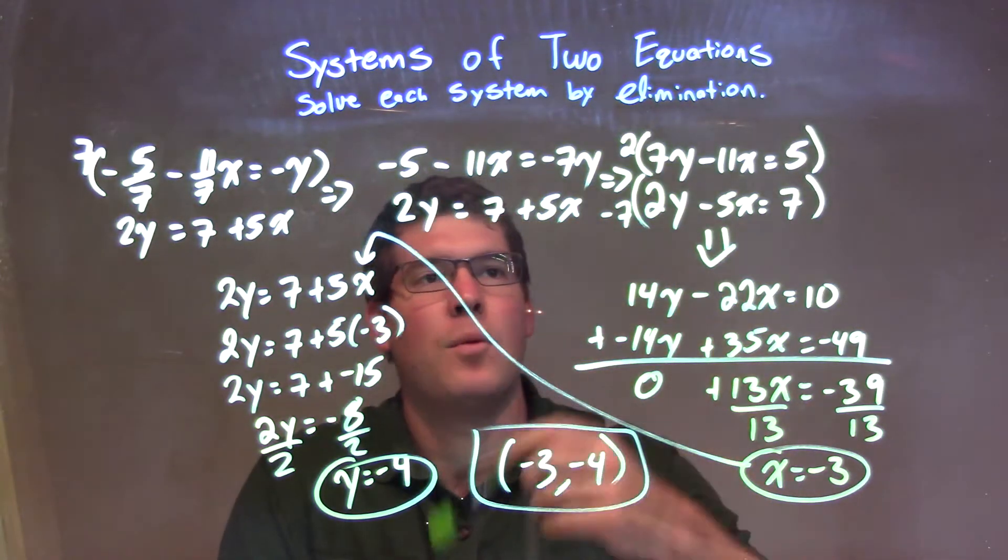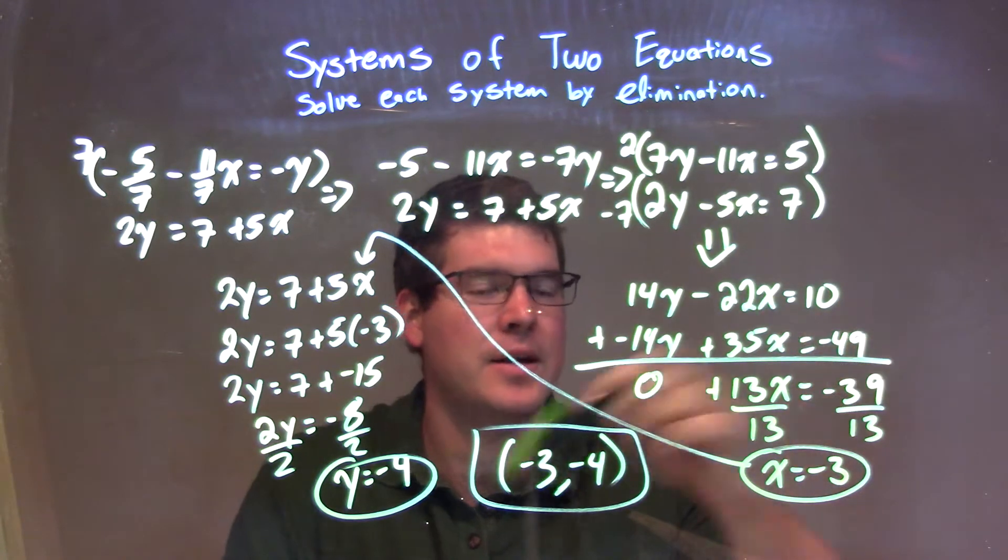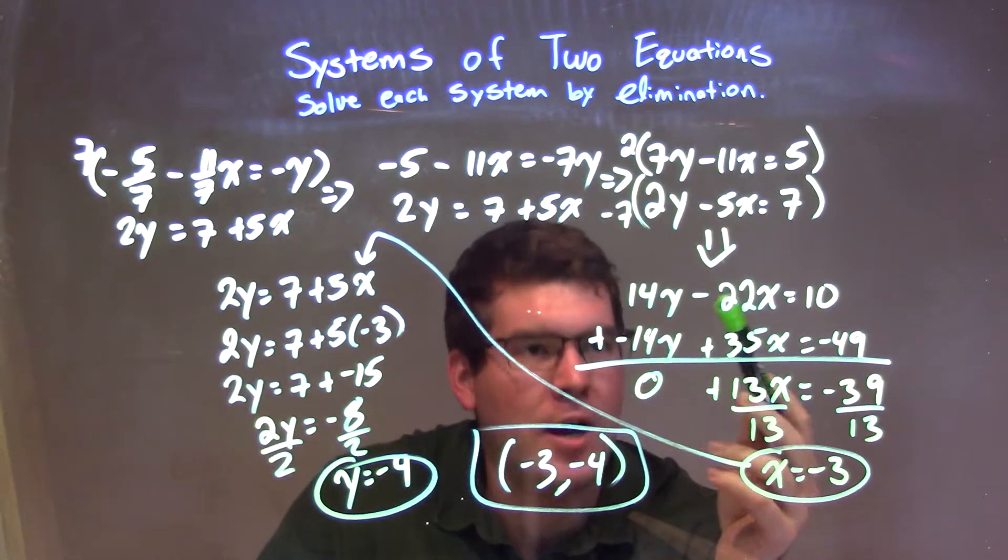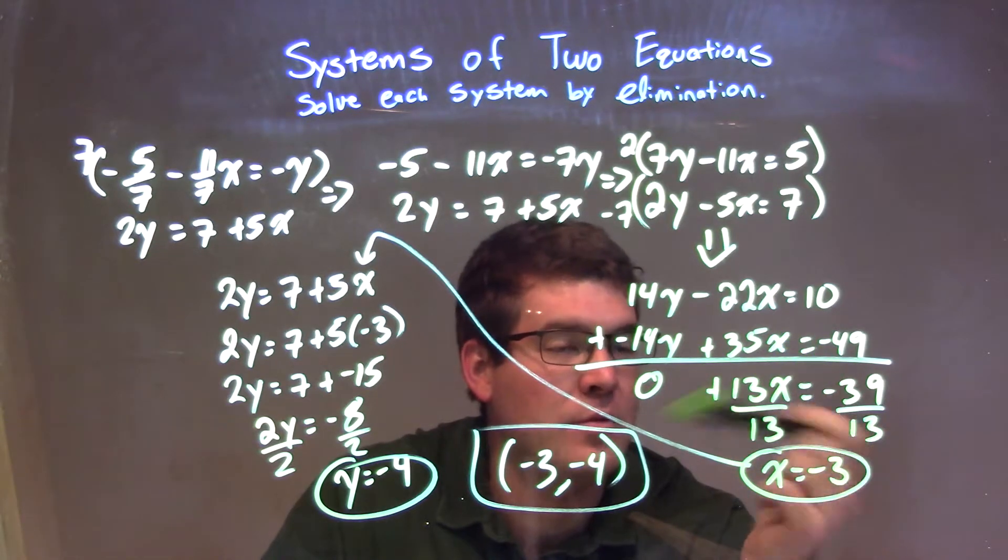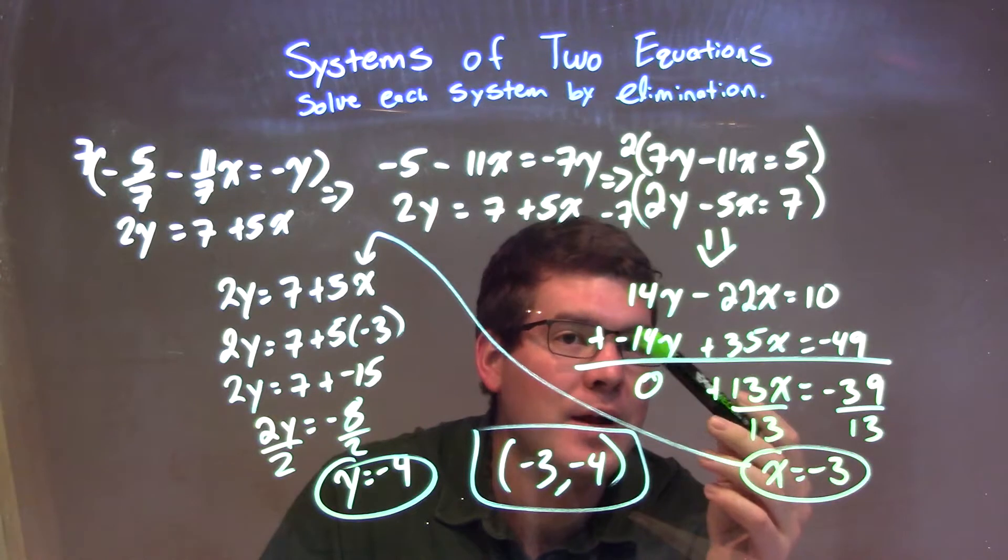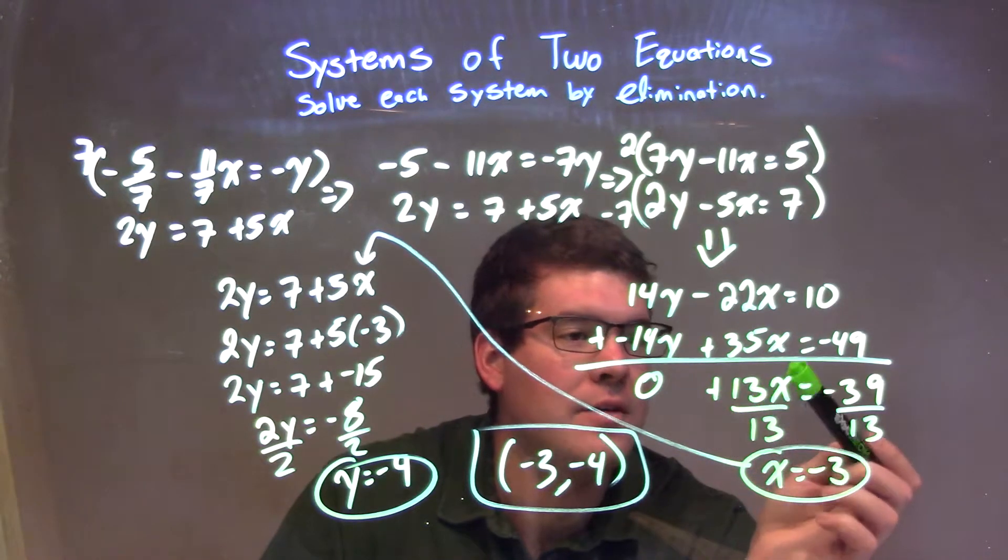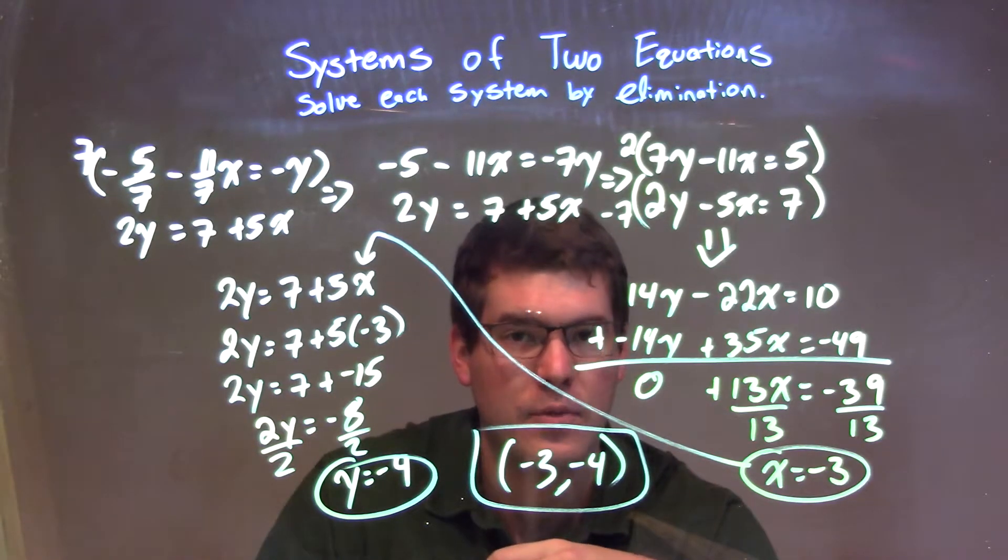From there, I wanted to eliminate the y, so multiply the top equation by 2, bottom by negative 7, which brought me to have 14y minus 22x equals 10, and negative 14y plus 35x equals negative 49. I added the two equations together and eliminated the y variable, giving me 13x equals negative 39, divided by 13, and I have x equals negative 3.